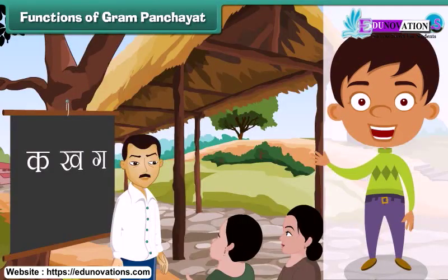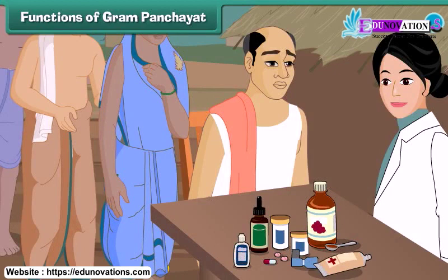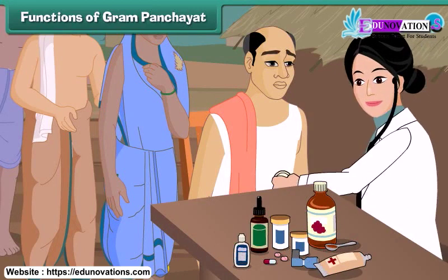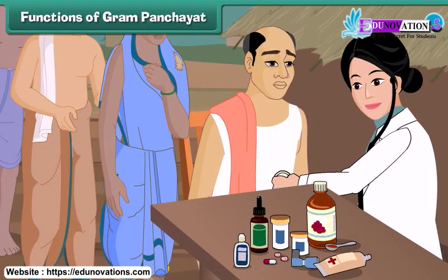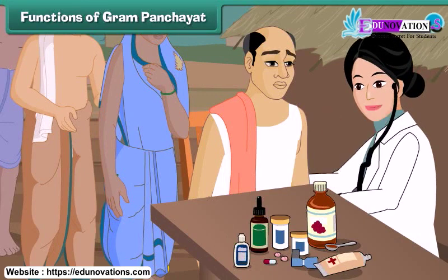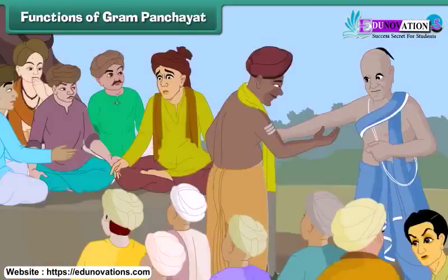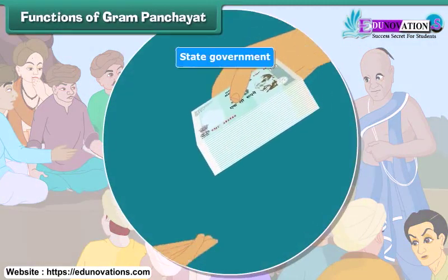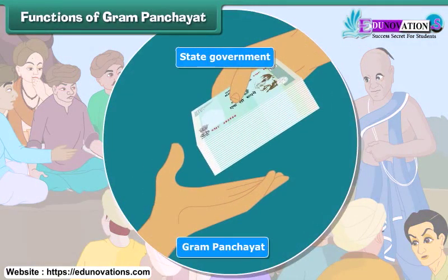It makes arrangements for the education of children and adults of the village. The gram panchayat provides facilities for maintaining public health and hygiene and organizes health programs for its people. It also maintains law and order in the village. For performing all these functions, the gram panchayat receives funds from the state government.